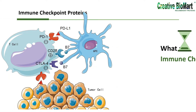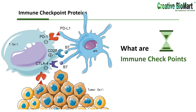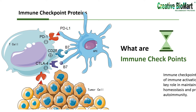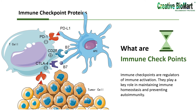Immune checkpoints are regulators of immune activation. They play a key role in maintaining immune homeostasis and preventing autoimmunity. In cancer, to eradicate tumor cells and induce antitumor immunity, T-cells are able to recognize tumor antigens presented to T-cell receptors by antigen-presenting cells. After binding to TCR, a second signal, a co-stimulatory signal, is needed for T-cell activation. The co-stimulatory signal comes from the binding of the CD28 molecule on T-cells with its ligand, B7 molecules on APCs.